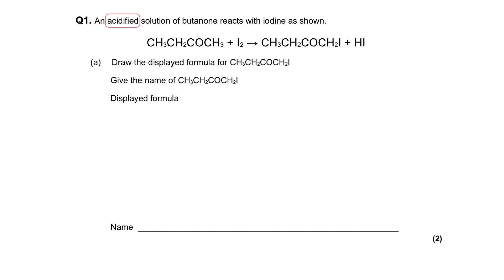An acidified solution of butanone reacts with iodine as shown in the equation here. You can see we've got butanone and here is the iodine. We've been told it's acidified but there's no evidence of H+ in the chemical equation, and that suggests that the acid is a catalyst.